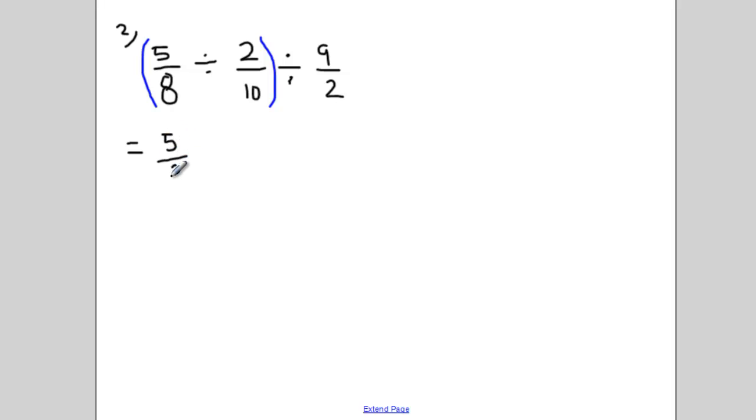So when I'm dividing fractions my method is to flip the fraction and change it to multiplication. I can do a little bit of reducing first. 8 divided by 2 is 4. 10 divided by 2 is 5.